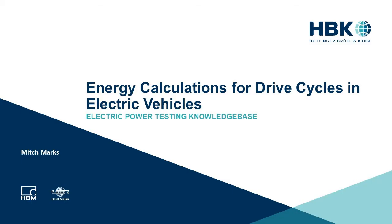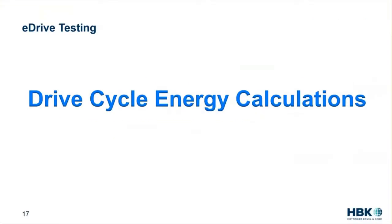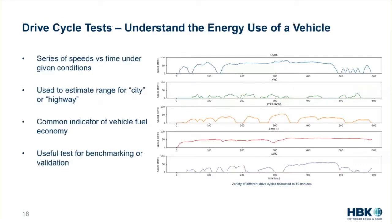Drive cycle energy calculations — moving from physically doing the test to calculating torque and speed. What a lot of us are after is energy. Drive cycles are a really popular way to understand energy use in a vehicle. A drive cycle is one of these EPA-dictated speed curves over time that dictate the torque of the machine. For example, the US06 has a couple hard accelerations, a long period of high-speed operation, and stop-start behavior — really looking at energy usage under different scenarios. These are typically run on a dyno, chassis dyno, or used for EPA fuel estimation and range determination.